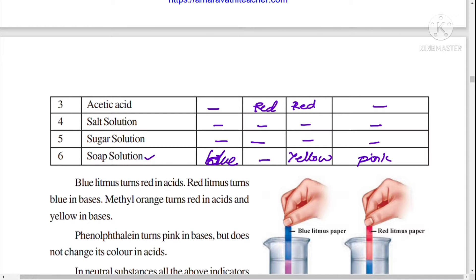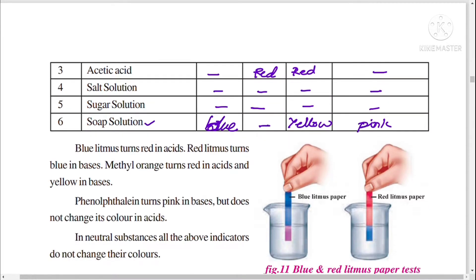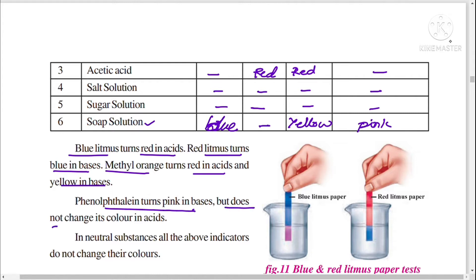From the table we conclude: blue litmus turns red in acids; red litmus turns blue in bases; methyl orange turns red in acids and yellow in bases; phenolphthalein turns pink in bases but does not change color in acids.